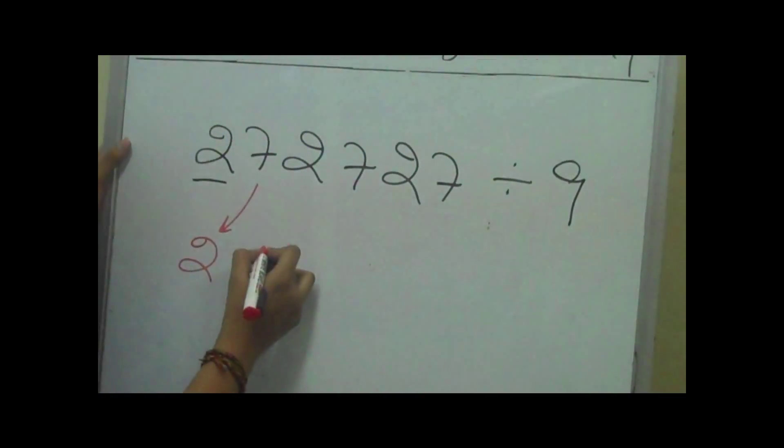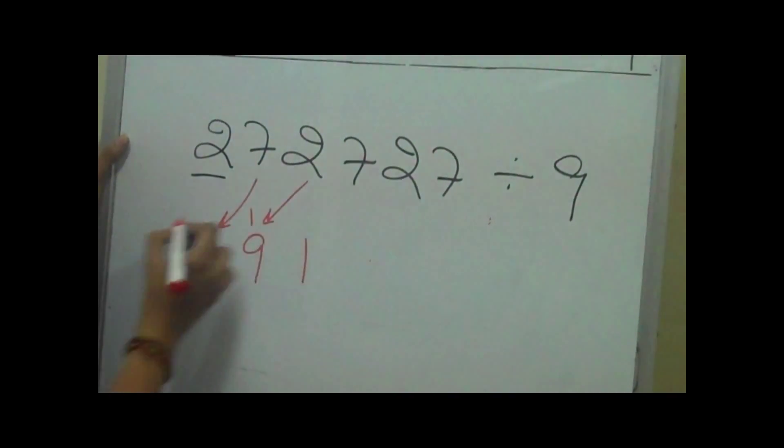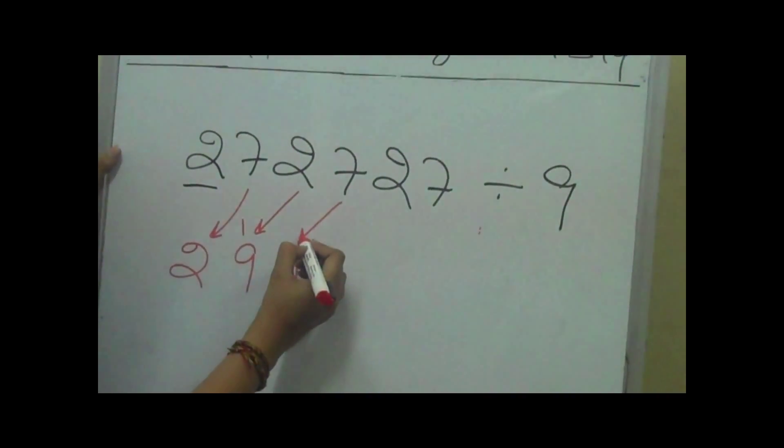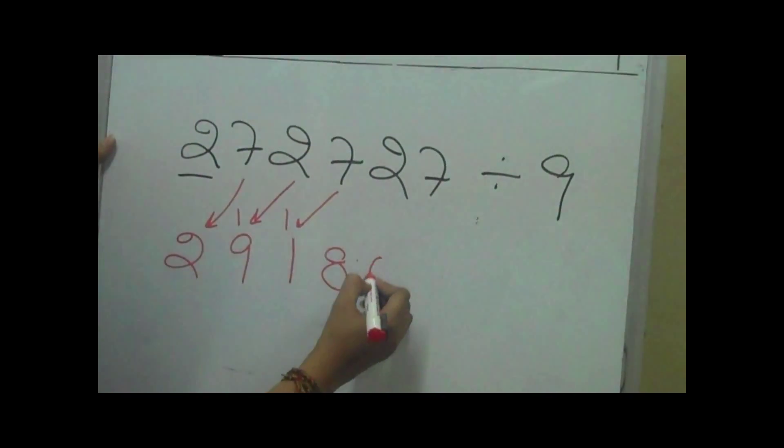Then we add this number to this number which makes 9. Then 9 plus 2 is 11, with 1 here and 1 as carry. 11 plus 7 is 18, with 1 again as carry.